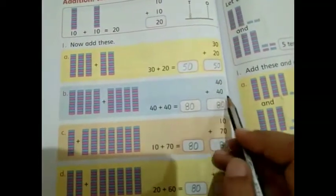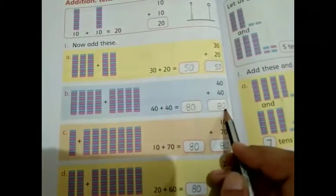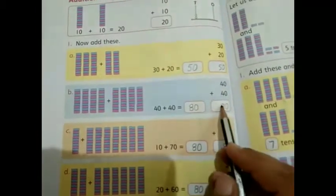Add vertically. Firstly, add ones: 0 plus 0, which is equal to 0. And 4 plus 4 is equal to 8.